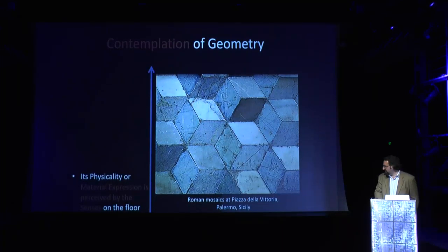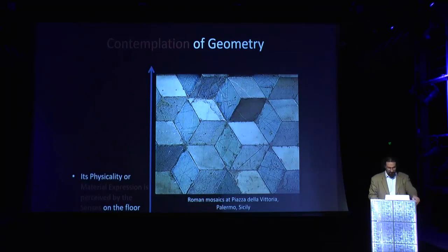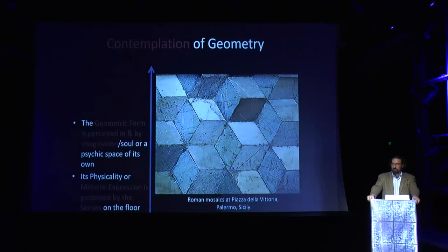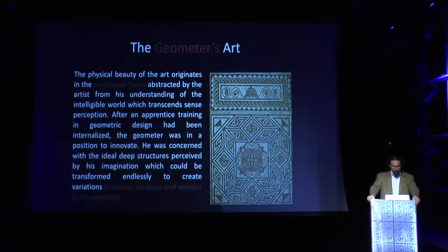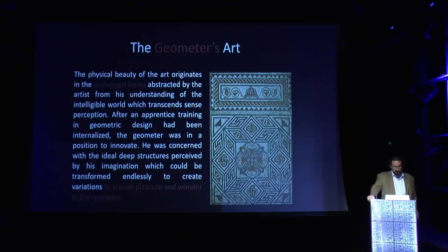We contemplate the material expression perceived by the senses and ascend to the geometric form perceived by the imagination, and then through sustained meditation we arrive at the principle perceived by the intellect. The physical beauty of the art originates in the archetypal forms abstracted by the artist from his understanding of the intelligible world, which eventually arouses pleasure and wonder in the spectator.